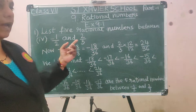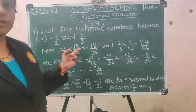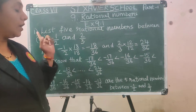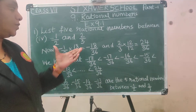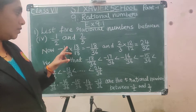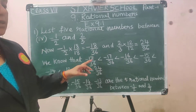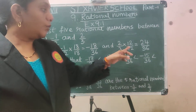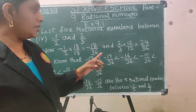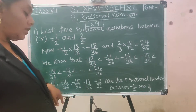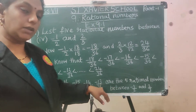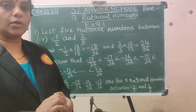Question 4: between minus 1 by 2 and 2 by 3. These are unlike fractions. Taking LCM as 36, multiply minus 1 by 2 by 18 over 18 to get minus 18 by 36, and 2 by 3 by 12 over 12 to get 24 by 36. Now we have like fractions. The 5 rational numbers between minus 18 and 24 (with denominator 36) are: minus 17 by 36, minus 16 by 36, minus 15 by 36, minus 14 by 36, and minus 13 by 36.